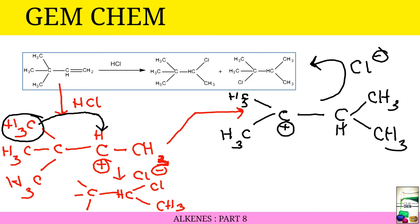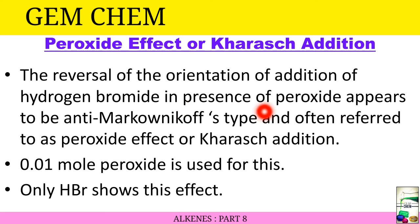Now we will see peroxide effect or Kharash effect. If you want to know the history behind Kharash addition, you can visit the Facebook page of GemChem at the rate of GemChem0051 and see that history already posted there. I will give the link in the description box also. The reversal of the orientation of addition of hydrogen bromide in presence of peroxide appears to be anti-Markonikov type and is often referred to as peroxide effect or Kharash effect or Kharash addition.